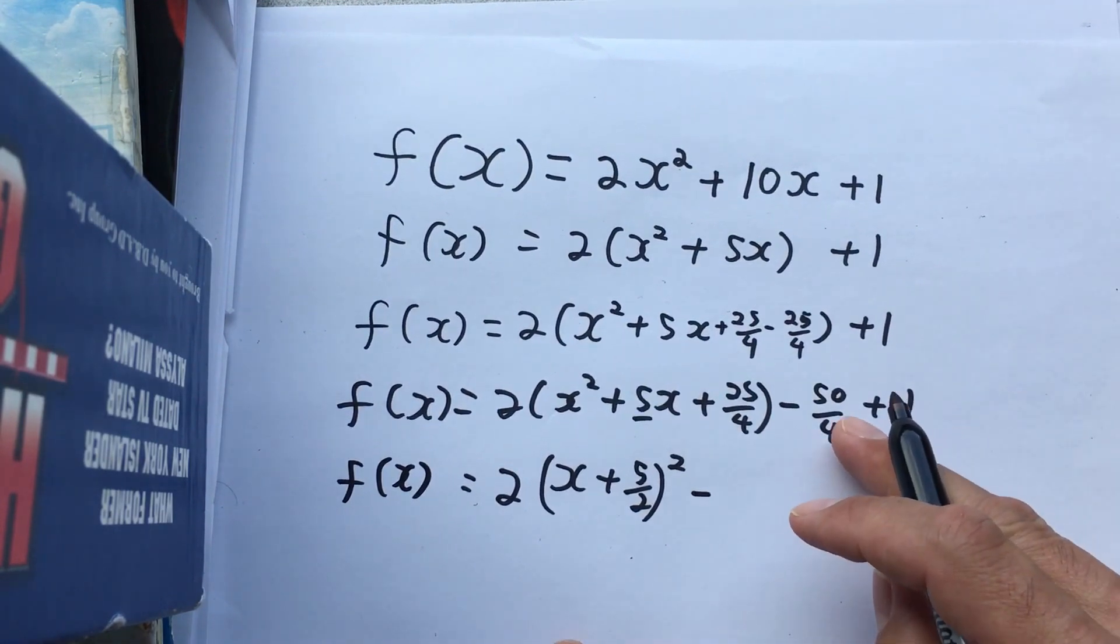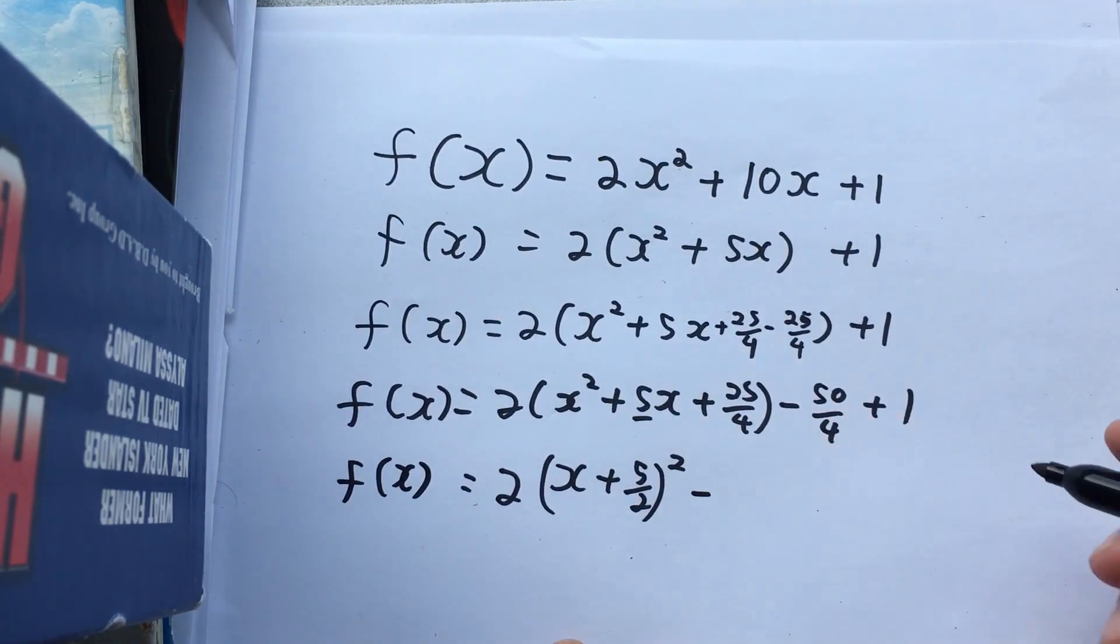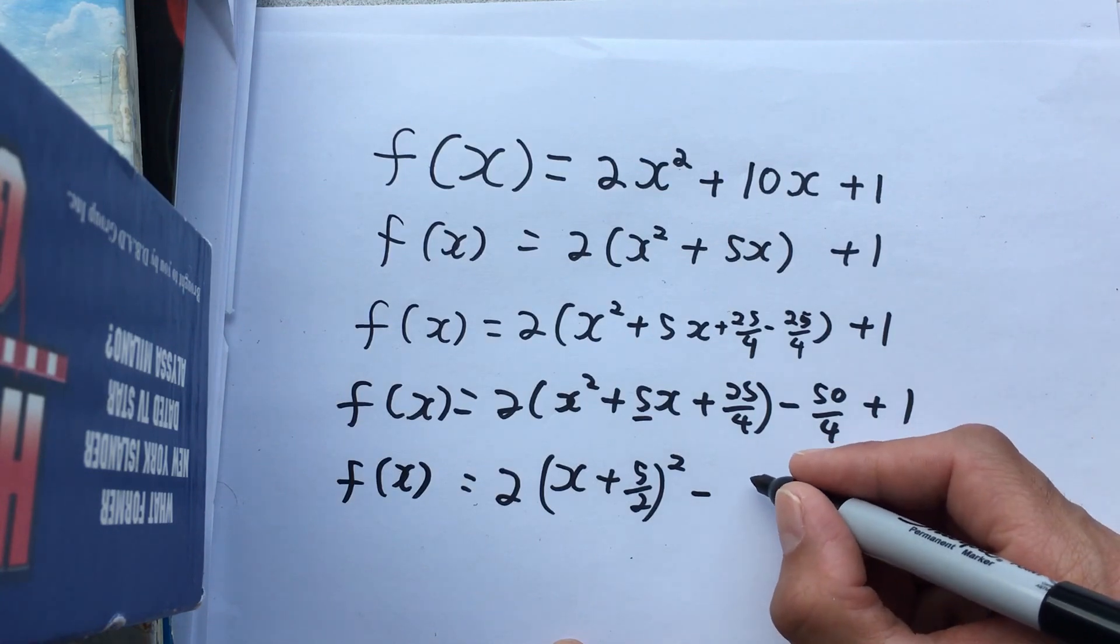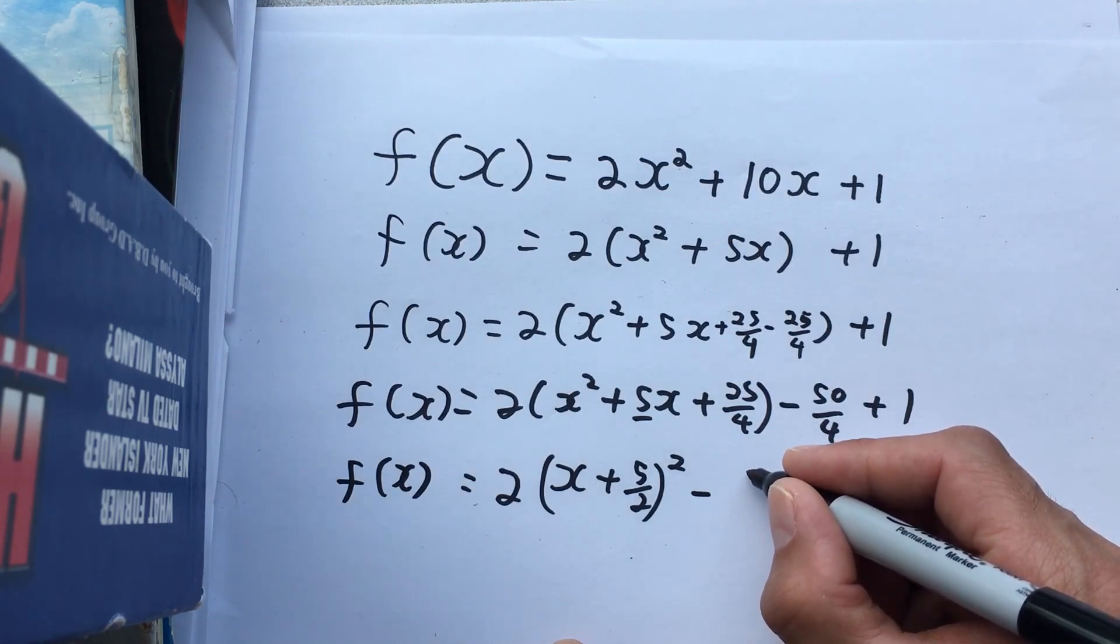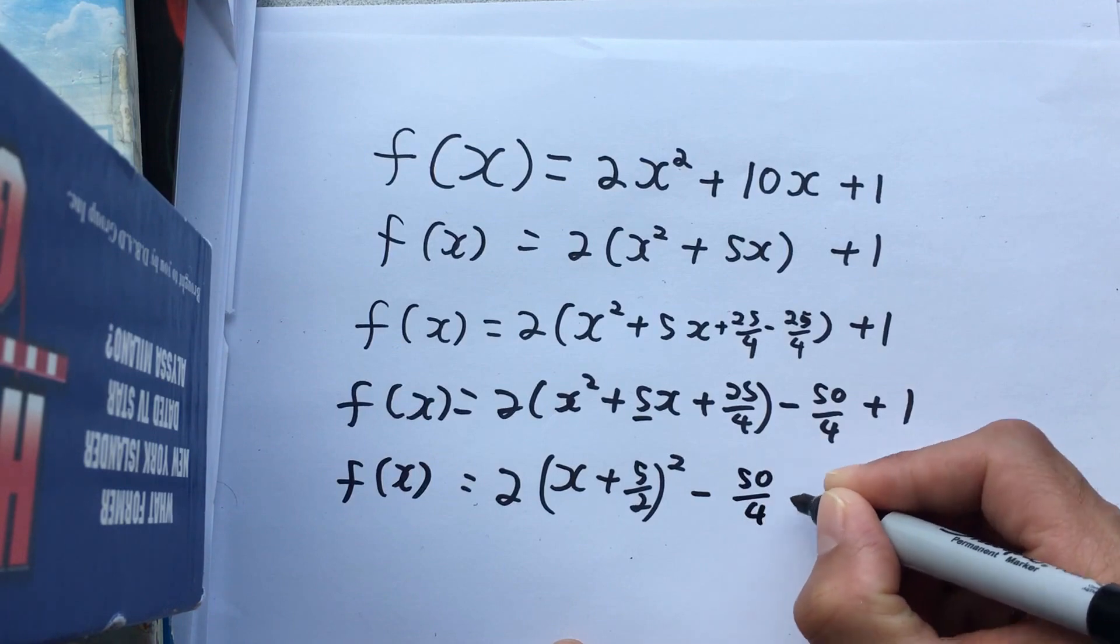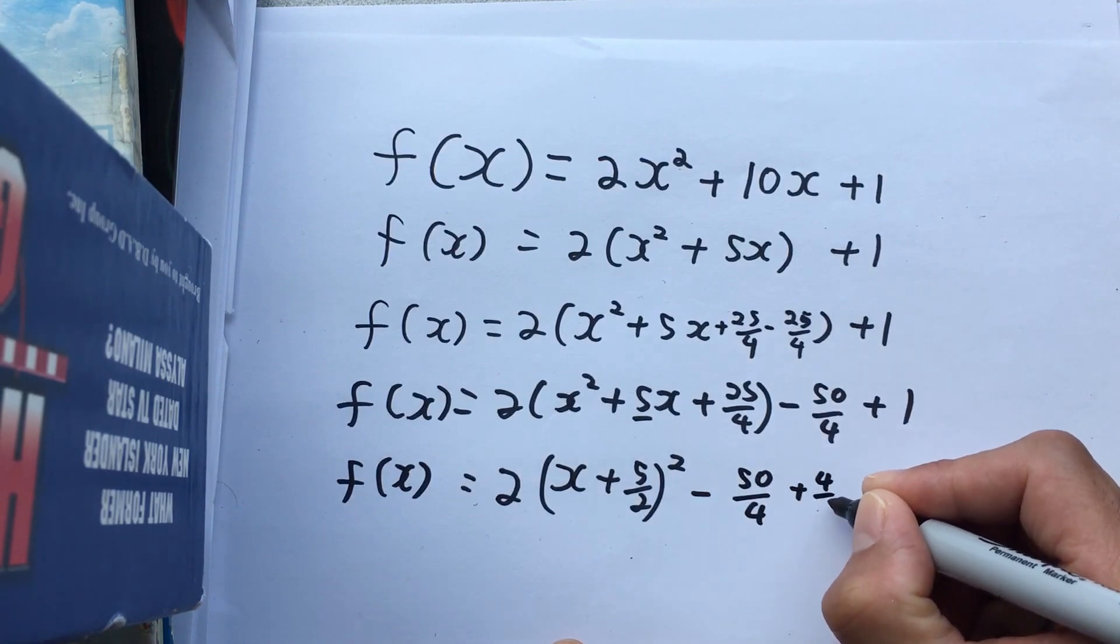Okay, now the numbers over here, I've got negative 50 over 4 plus 1. And 1 is 4 over 4, so that's negative 50 over 4 plus 4 over 4.